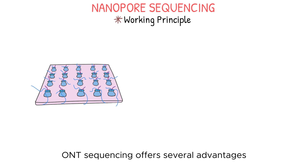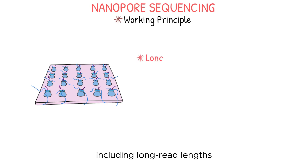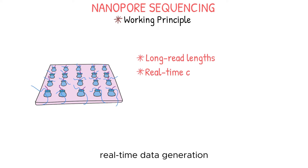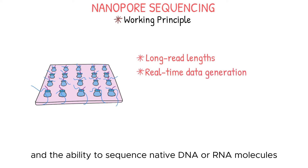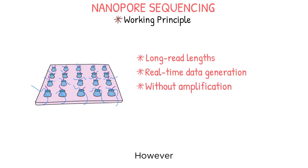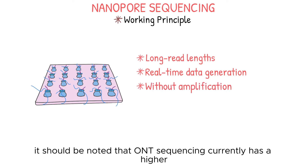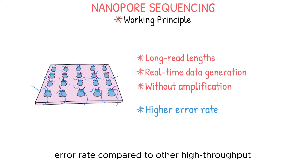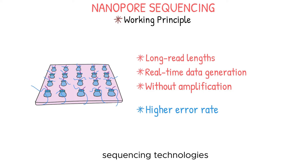Overall, ONT sequencing offers several advantages, including long read lengths, real-time data generation, and the ability to sequence native DNA or RNA molecules without the need for amplification. However, it should be noted that ONT sequencing currently has a higher error rate compared to other high-throughput sequencing technologies, such as Illumina sequencing.